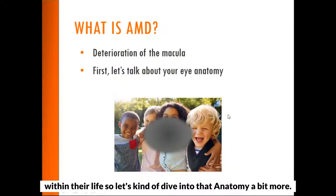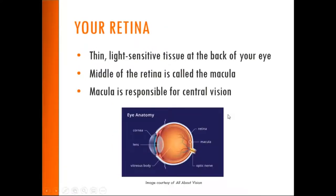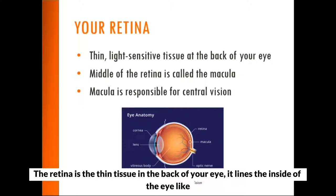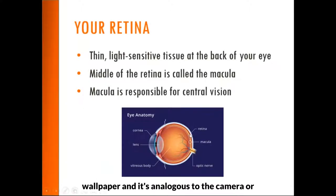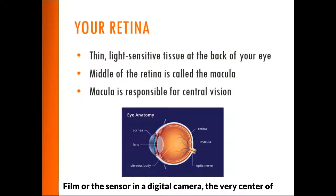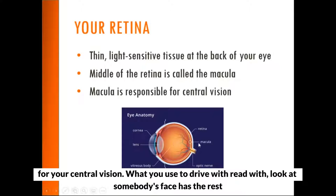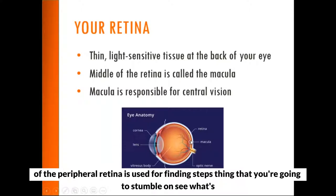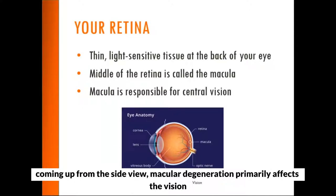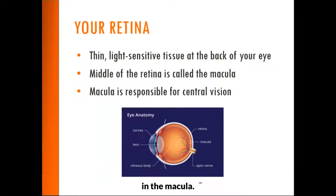The retina is the thin tissue in the back of your eye. It lines the inside of the eye like wallpaper and is analogous to the film or the sensor in a digital camera. The very center of the retina at the very back is the macula, and that's what's responsible for your central vision — what you use to drive, read, and look at somebody's face. The rest of the peripheral retina is used for finding steps, seeing what's coming up from beside you. Macular degeneration primarily affects the vision in the macula.